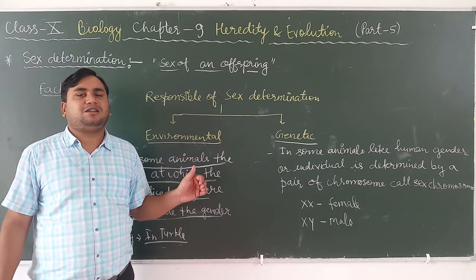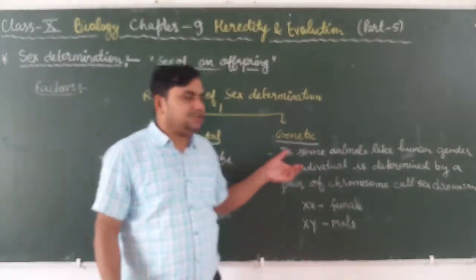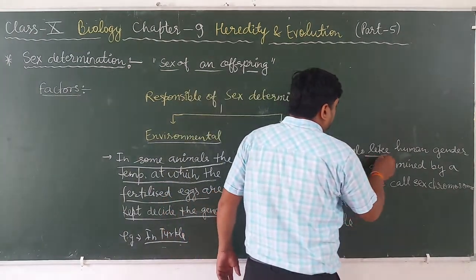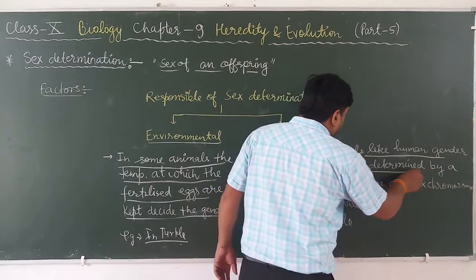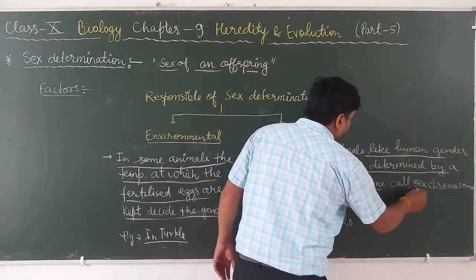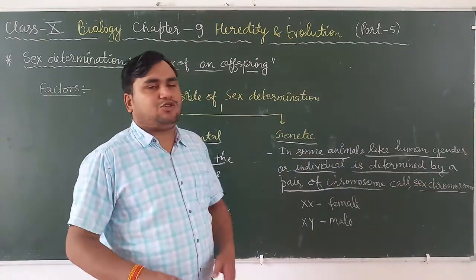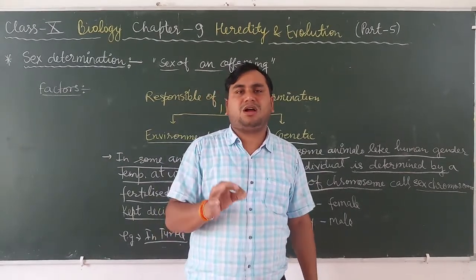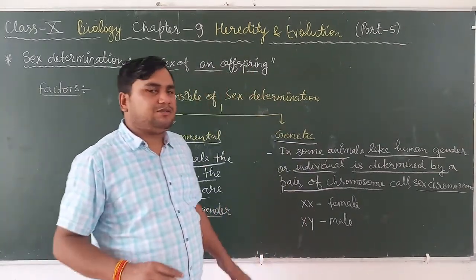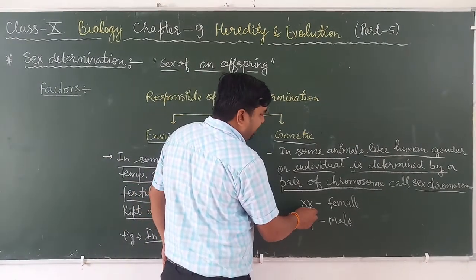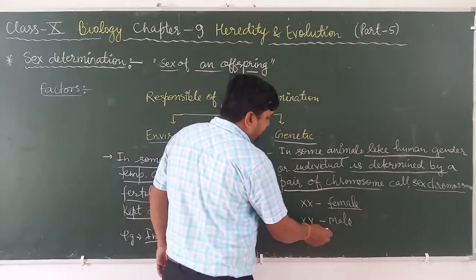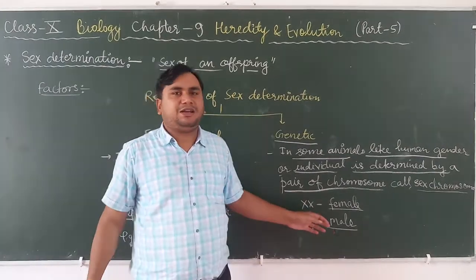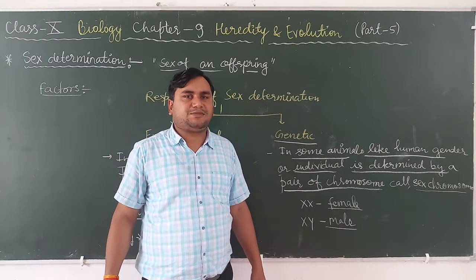The second one is the genetic factor. On the basis of genetics, in some animals just like human beings, the gender of an individual is determined by a pair of chromosomes that is called sex chromosome. In humans, capital XX shows the female and capital XY shows the male chromosome, which determines the sex of that particular organism.